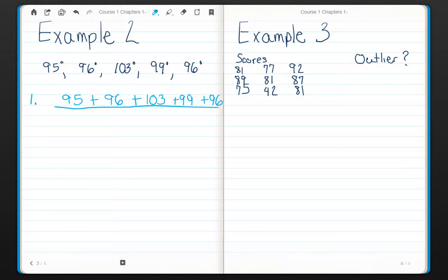So I'm going to add all of these up. I have 1, 2, 3, 4, 5 data points. So I'm going to divide by 5. If I add all of that up, that equals 489 divided by 5, which equals 97.8 degrees.